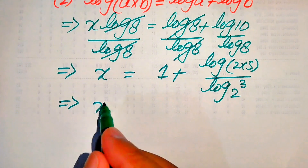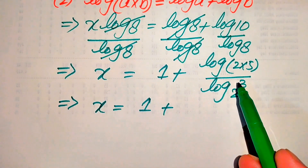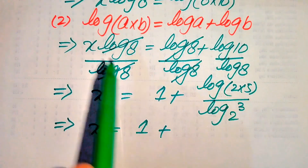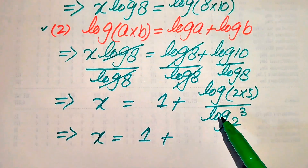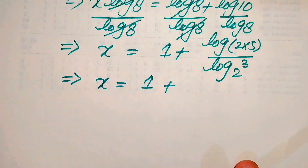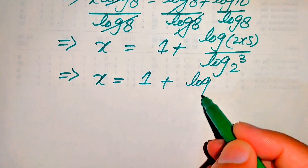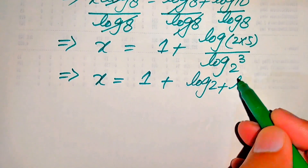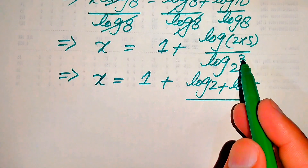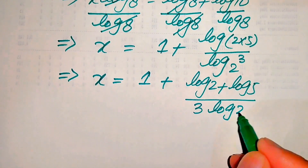In the next step, x equals 1 plus, in the numerator we apply the second property of log, and in the denominator we apply the first property of log. After applying both properties, we write these terms as log 2 plus log 5 divided by 3 times log 2, moving the exponent 3 to the front.